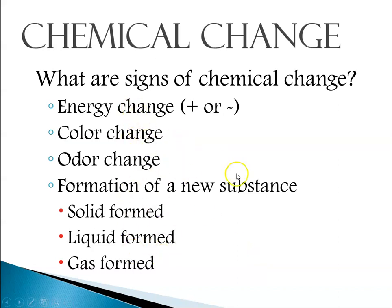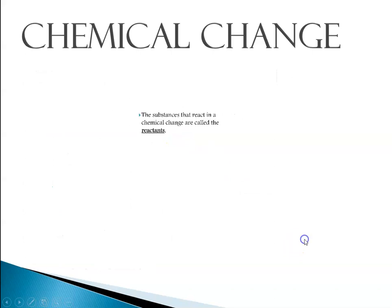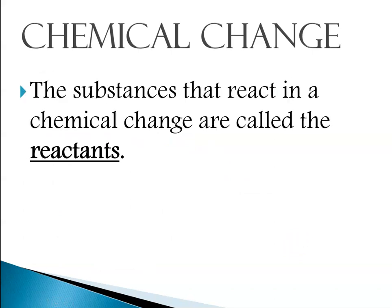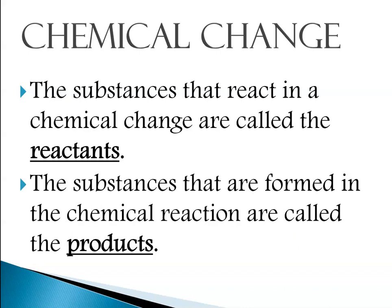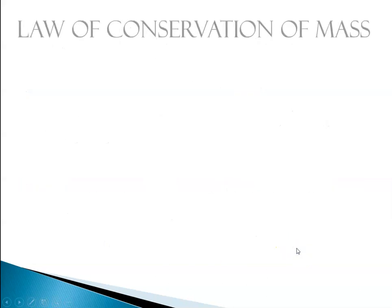When talking about a chemical change, you've probably discussed chemical equations in bio class — for instance, cellular respiration. The substances that react in a chemical change, the starting materials, are called the reactants, usually written on the left. The substances that are formed or produced are called the products.